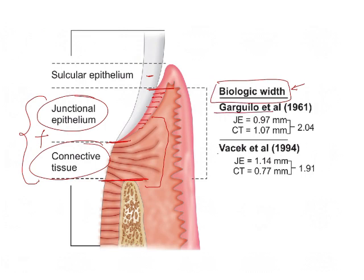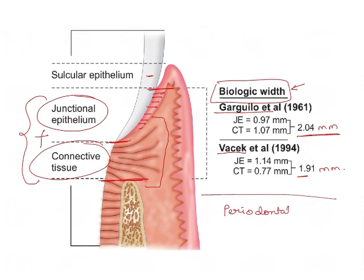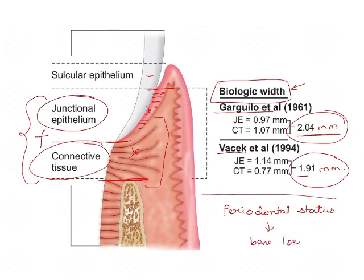As given by Gargiulo et al. and Vacek et al., the measurement of junctional epithelium is 2.04 mm, or nearly 1.9 mm. The significance of biologic width is its importance in maintaining the periodontal status of a tooth. If the biologic width is reduced — meaning if the epithelium or connective tissue is compromised — it leads to bone loss, gingival recession, and failure of the restoration, resulting in prosthetic and periodontal failure.